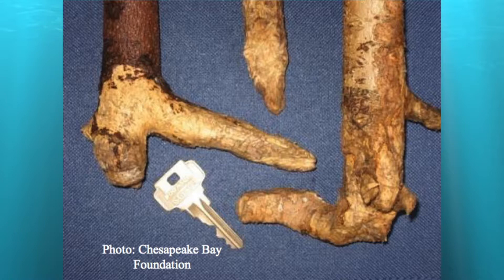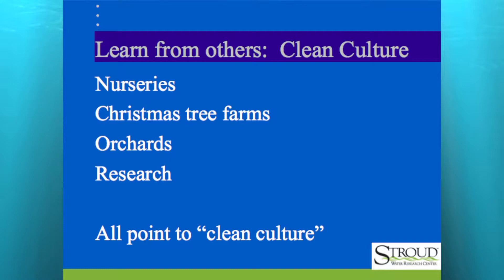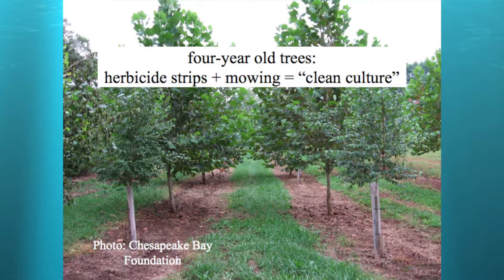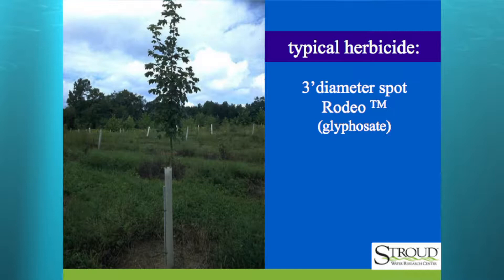The green death is too much competition for light and nutrients for trees from heavy grass, and the grass harbors voles which will kill the trees. Nurseries, Christmas tree farms, orchards, and researchers have all coalesced to say the way you get trees to grow in this ecoregion is clean culture — keeping heavy grass presence away from the trees. You don't have to do strips. This looks a lot like a grow-out at a nursery, but it's a highly successful four-year-old CREP buffer.